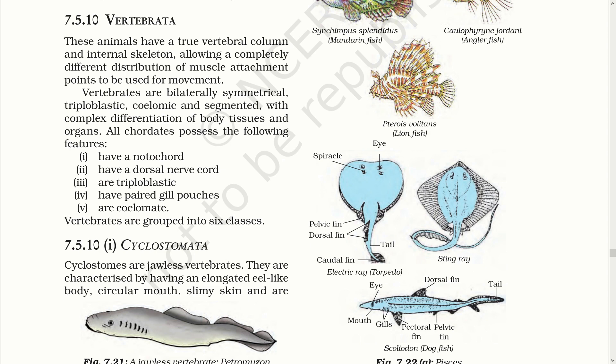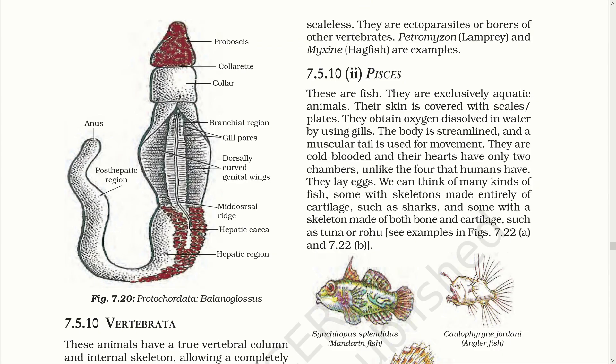The first class is Cyclostomata. Cyclostomes are jawless vertebrates. They are characterized by having an elongated eel-like body, circular mouth, slimy skin and are scaleless. They are ectoparasites or borers of other vertebrates. Petromyzon and Myxine are examples.